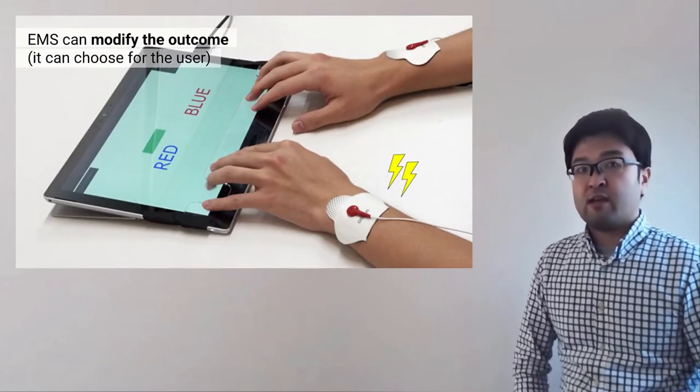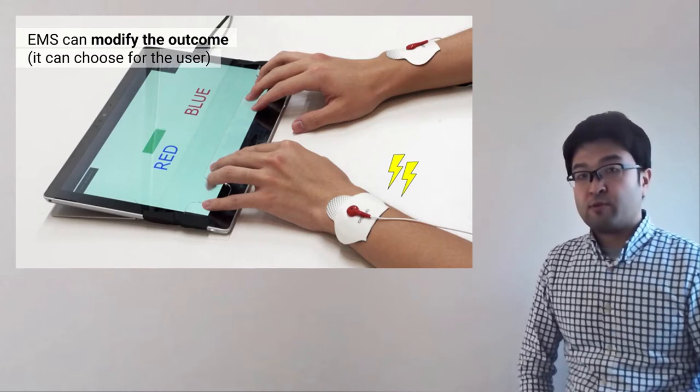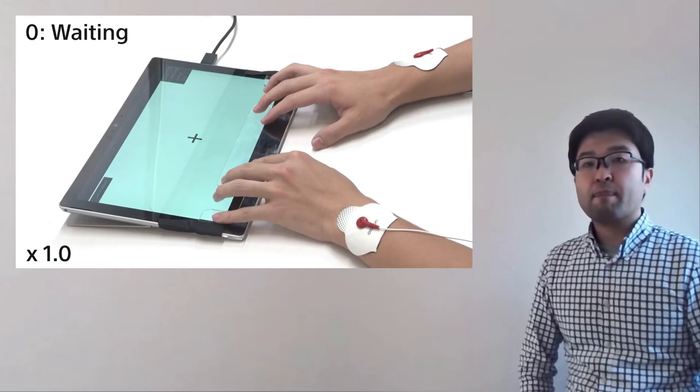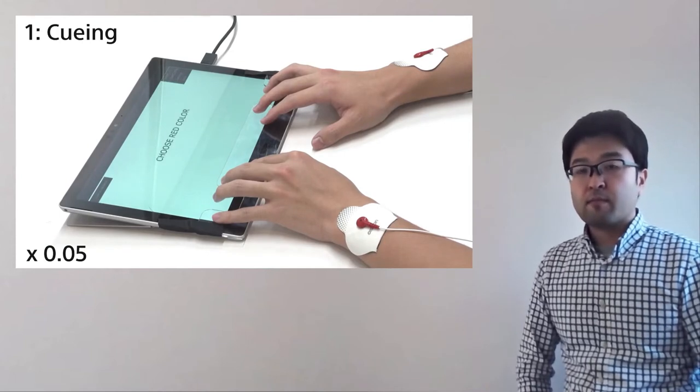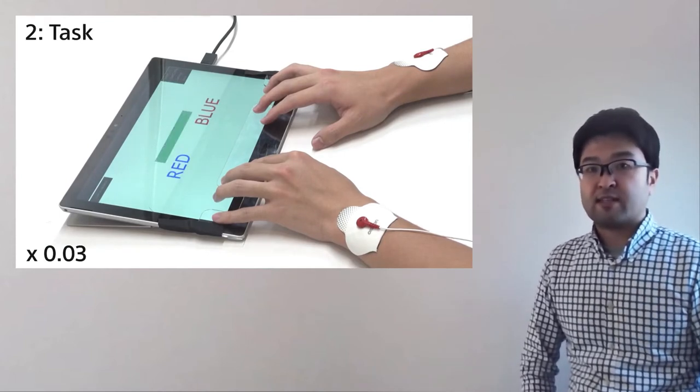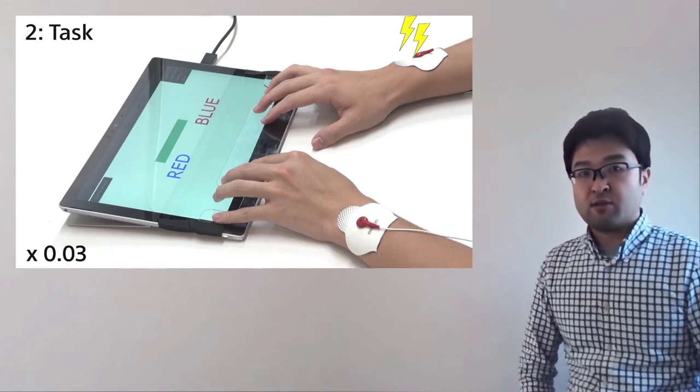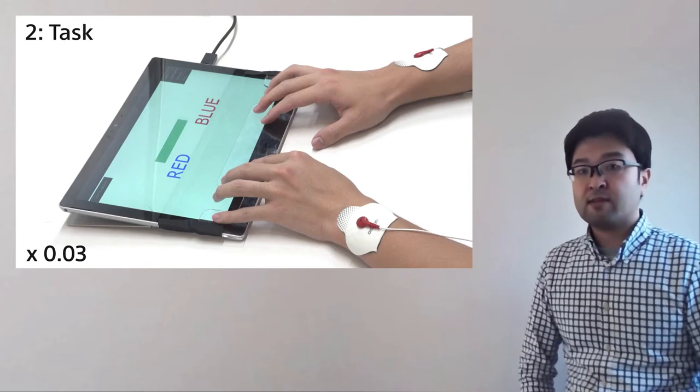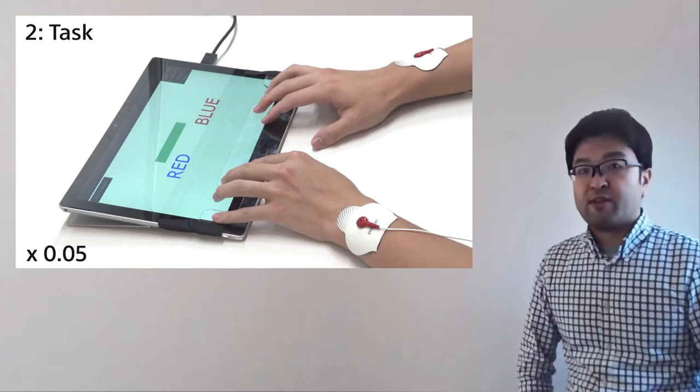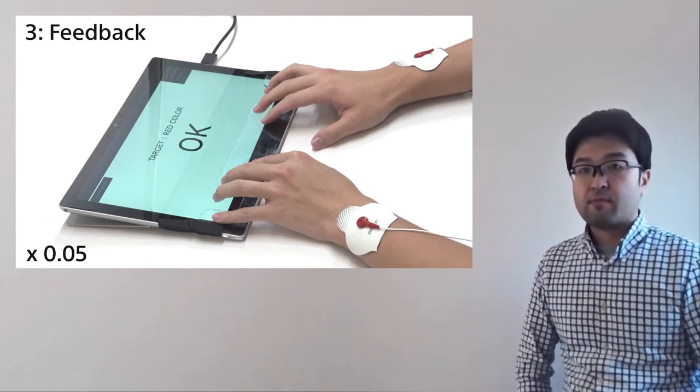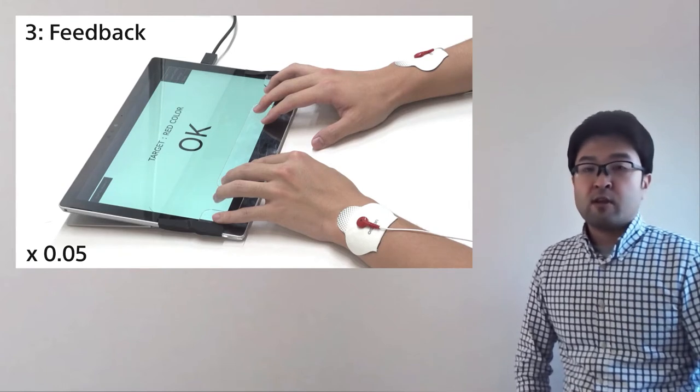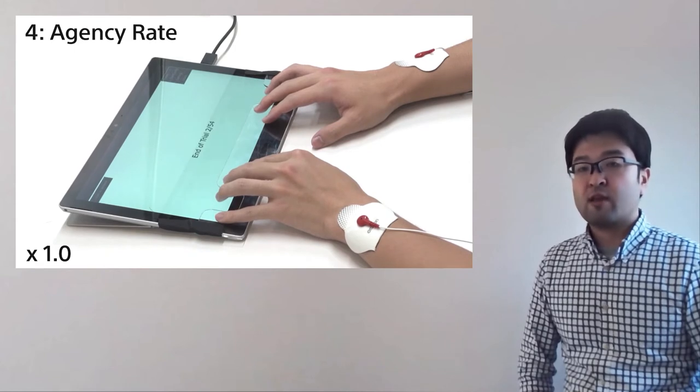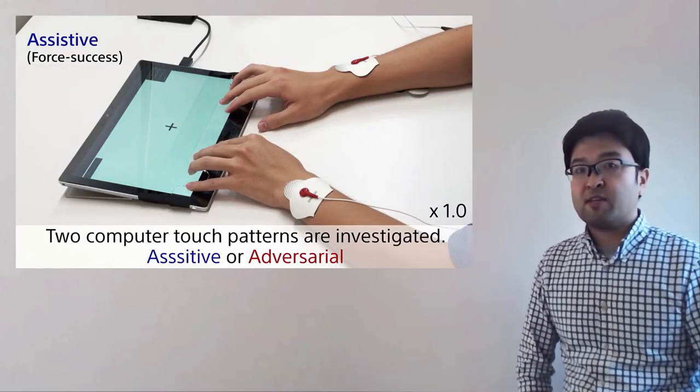Muscle stimulation can modify its outcome. How to do that? This is the procedure. Waiting, cueing, then task. Participant do the task and also muscle stimulation acts the user's finger to respond. After that, the feedback is presented. Then, participant needs to rate the sense of agency for its action.